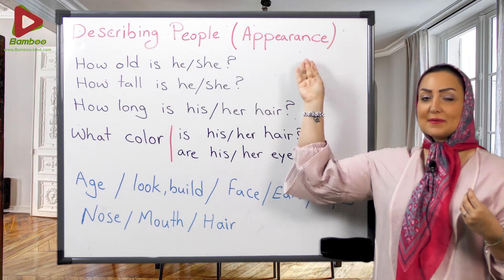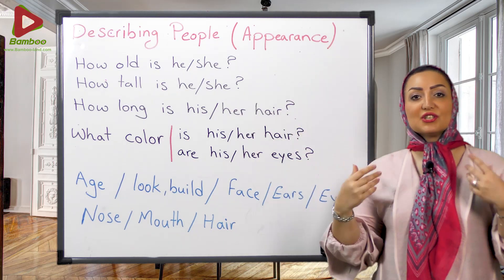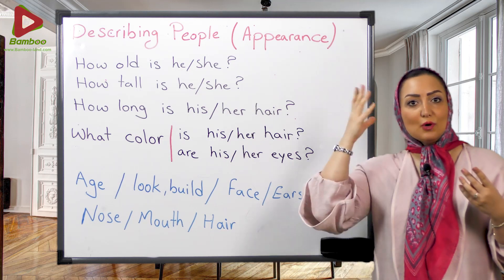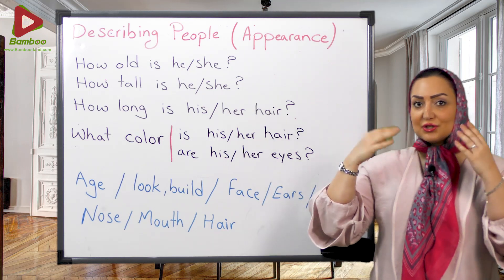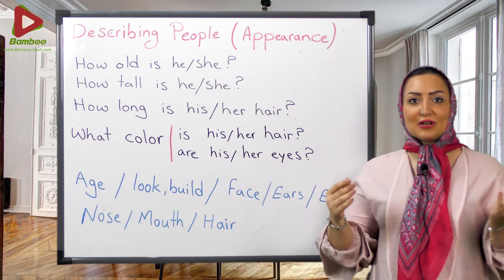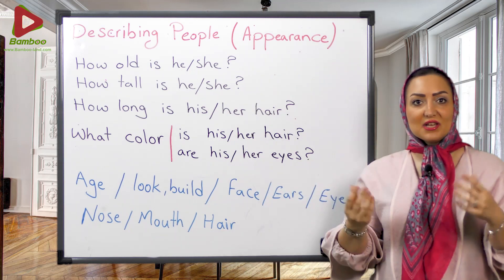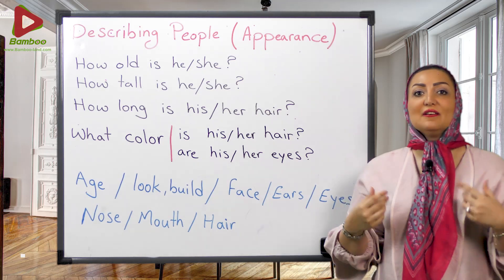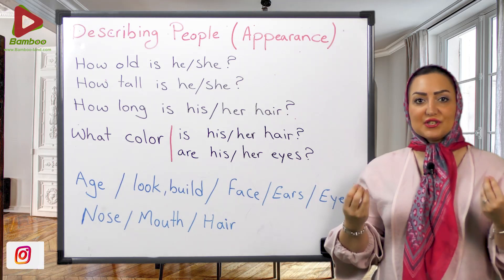Appearance — or how they look — چطور به نظر میرسن. مثلاً موهاش چه رنگیه، چشاش چه رنگیه، قد بلنده، قد کوتاهه، چاق، لاغره. همه اینا میشه appearance — physical features.